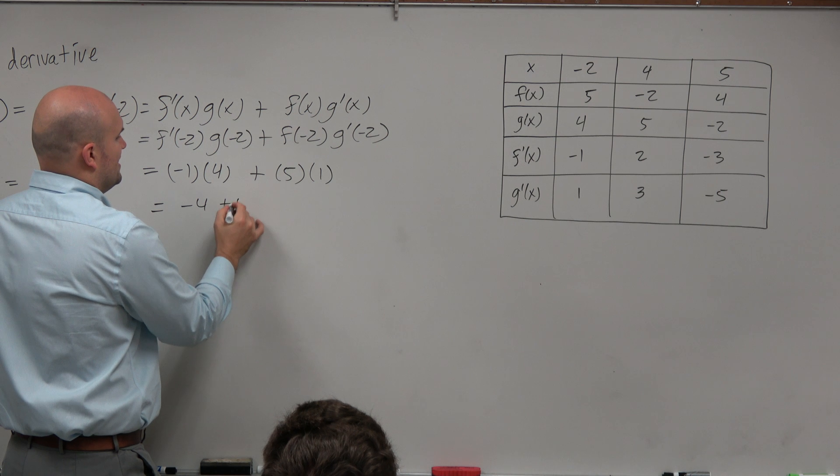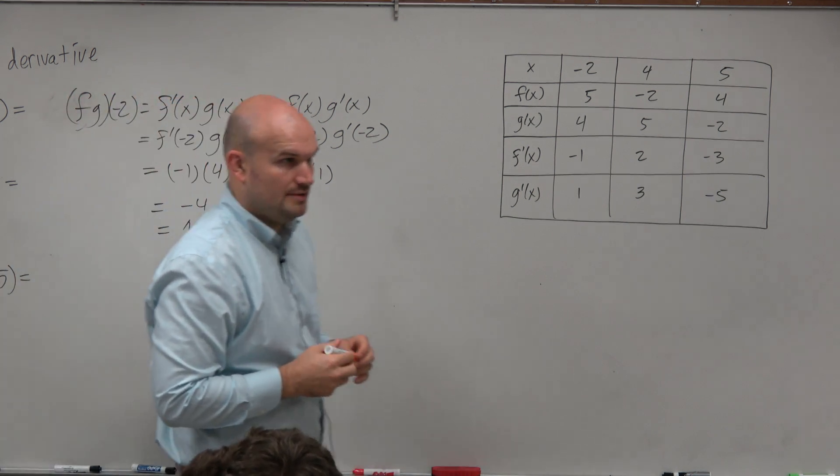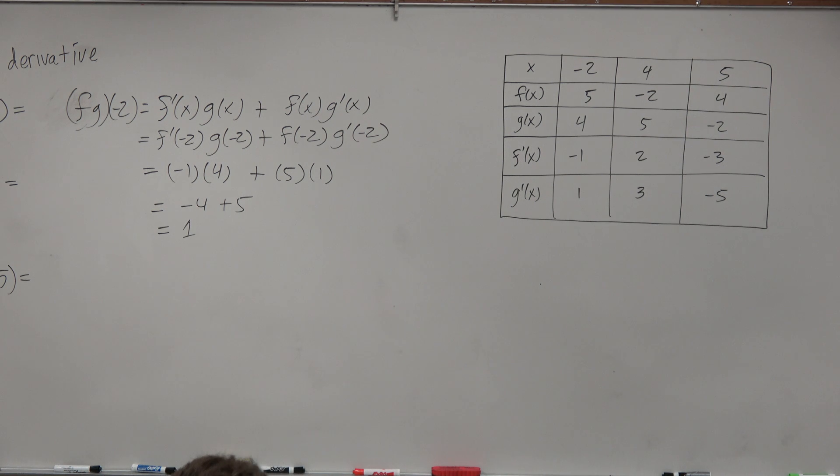So we have negative 4 plus 5, which equals a positive 1. Good. So therefore, on the quotient rule guys, it's just going to be the exact same thing.